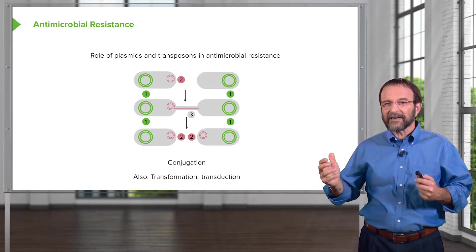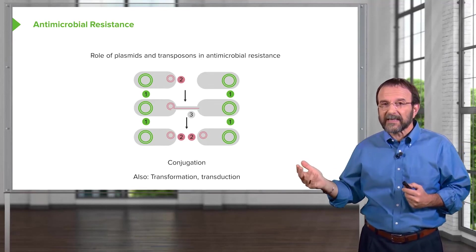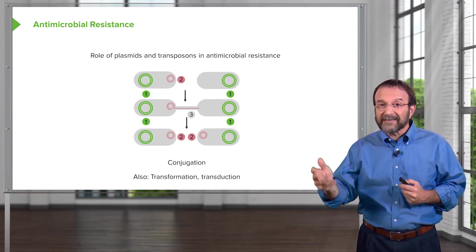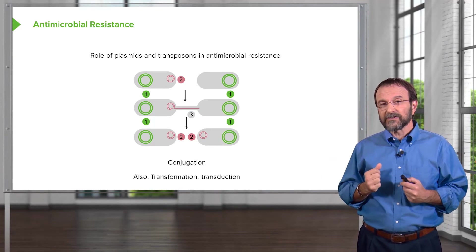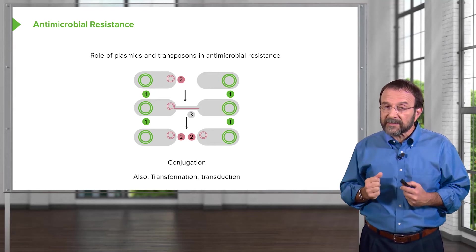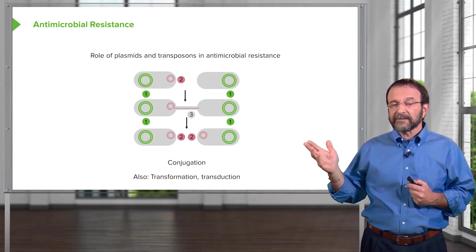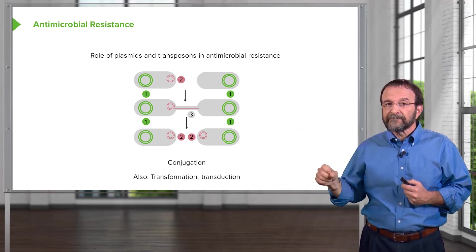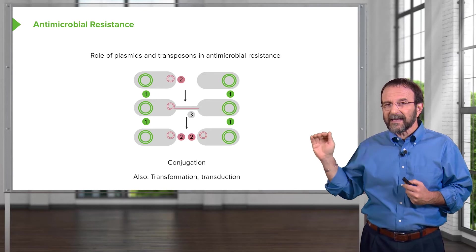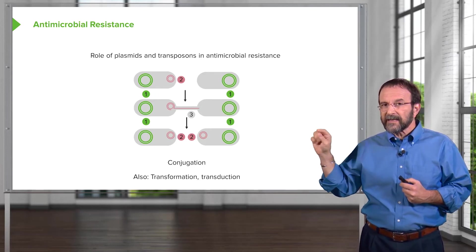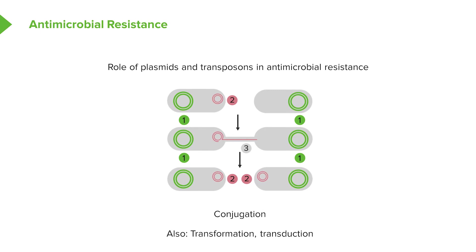Further complicating antibiotic resistance is that the genes encoding resistance factors — for example, those encoding beta-lactamases — are often able to move from bacterium to bacterium. One way to do that is via plasmids, and in fact many antibiotic resistance genes are encoded on plasmids. This diagram shows how plasmids can move from one bacterial cell to another. A cell with a chromosome and a plasmid encoding a beta-lactamase can transfer that plasmid through a pilus joining the two cells, so the second cell acquires antibiotic resistance.